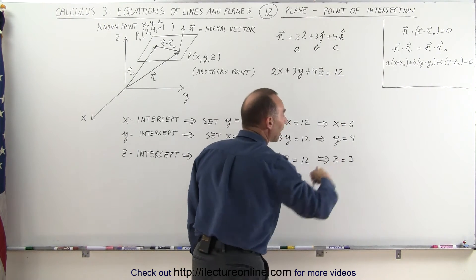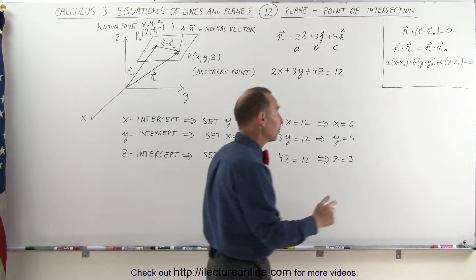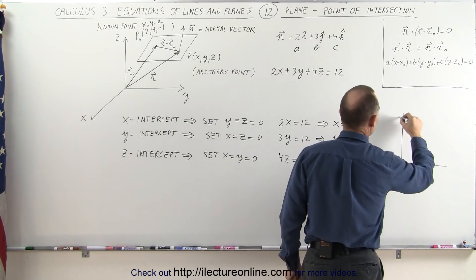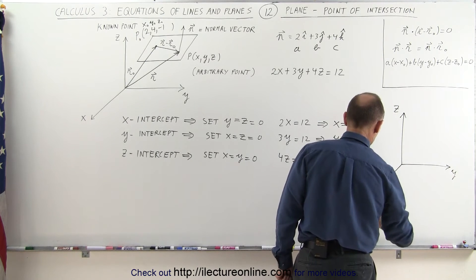These are the x, y, and z intercepts of the plane. Now if we want to draw that, it makes it pretty easy. Let's put the coordinate system down: the z-axis, the y-axis, and the x-axis.